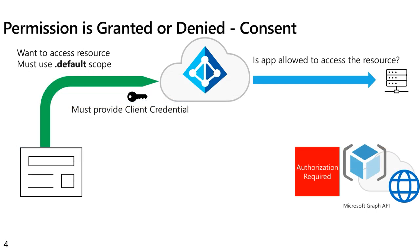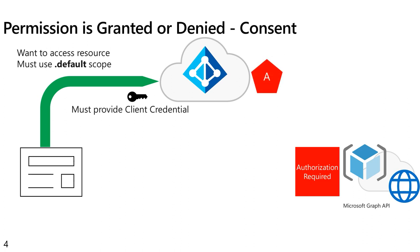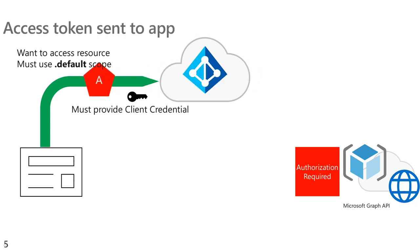Having determined that, the application is either going to be granted consent, and we will create a token for that, or it will be denied — which would be the case if there had been no permissions in the application registration, or if the admin had not yet consented to those permissions. But as long as the application has those in place on its application registration and the admin has consented, then we will return the application permission token to the service.